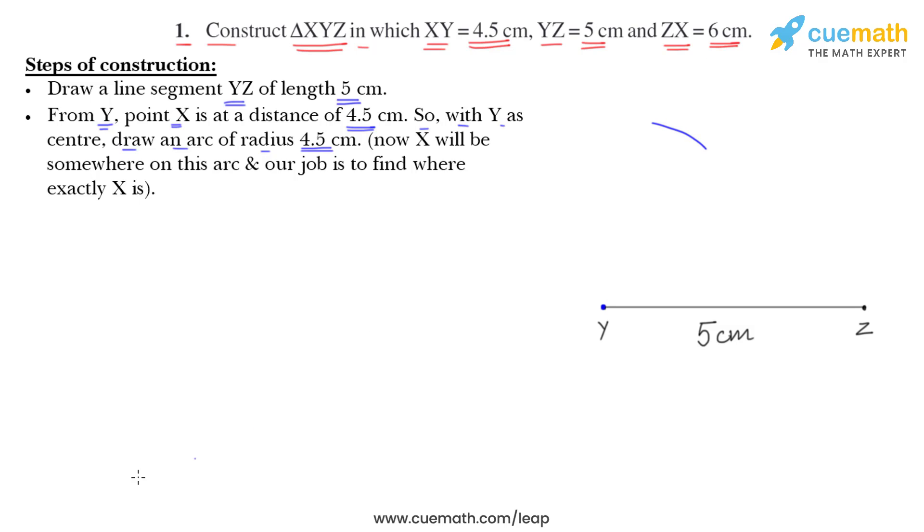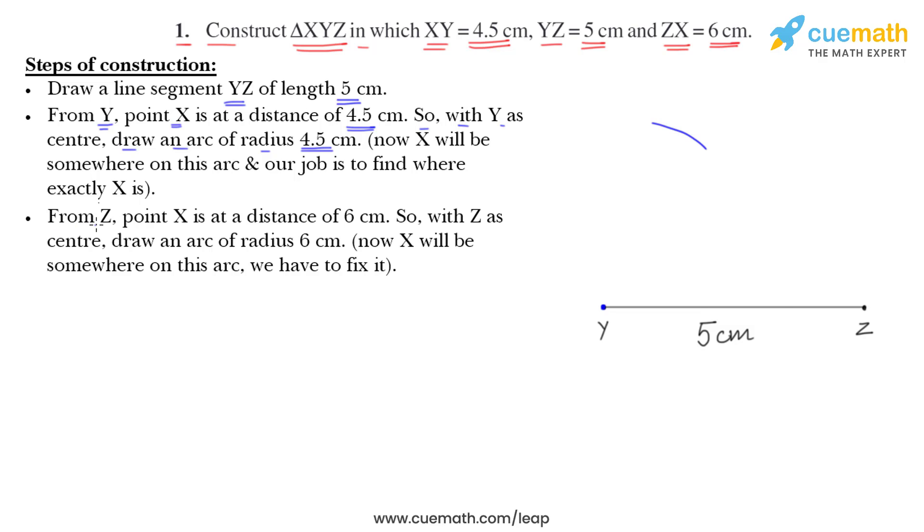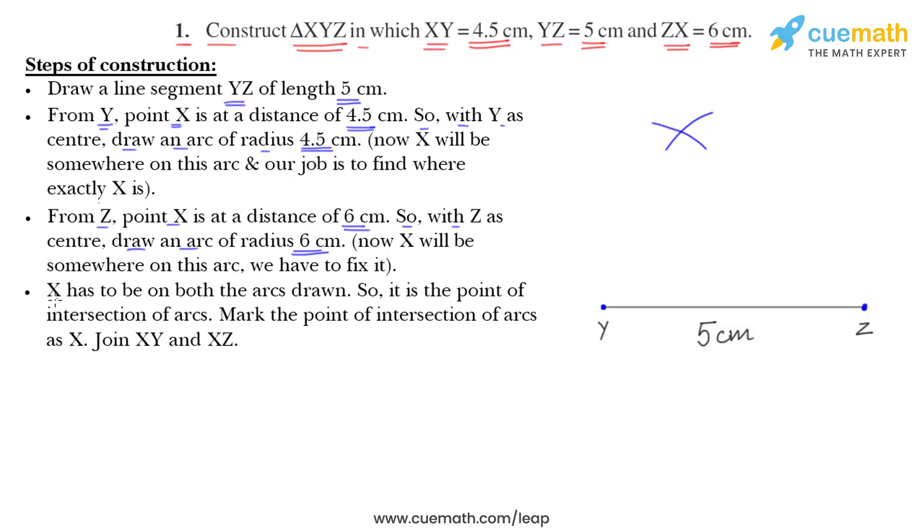Next step. From Z, point X is at a distance of 6 cm because they have given ZX is 6 cm. So, with Z as center, draw an arc of radius 6 cm like this. X will also be on this arc and X has to be on both the arcs drawn.